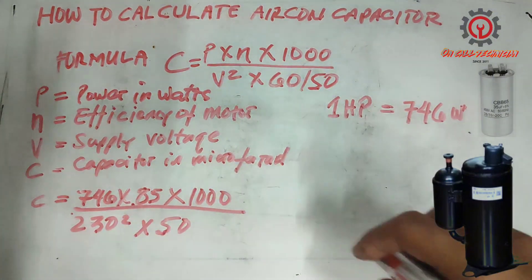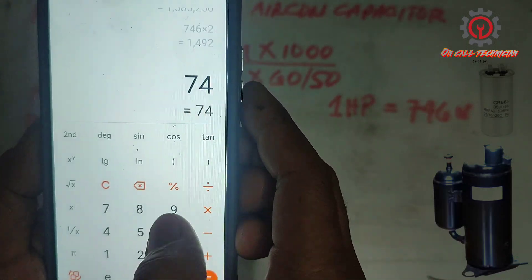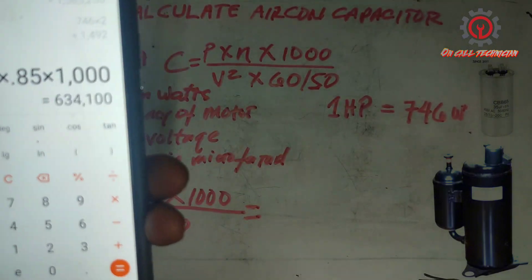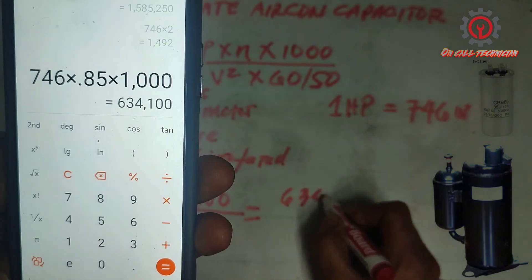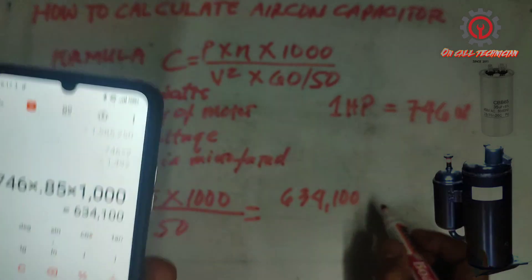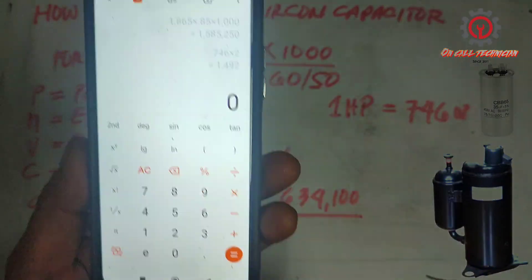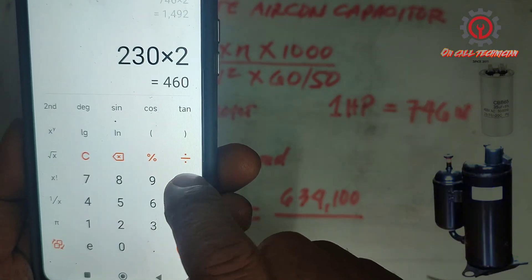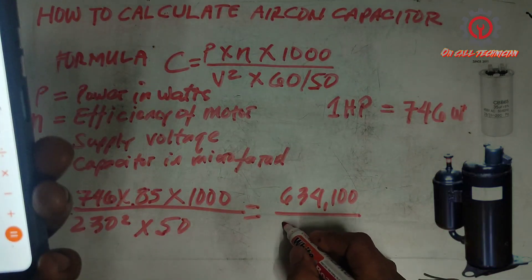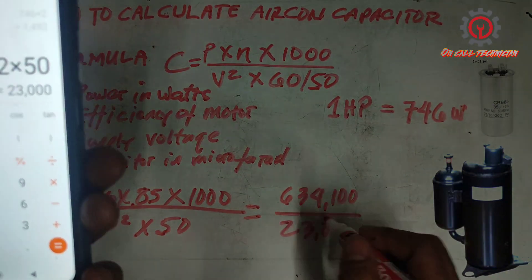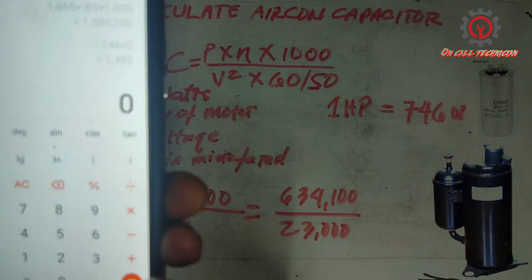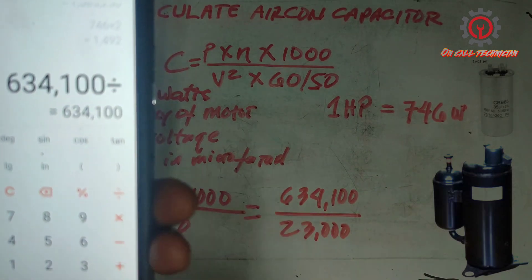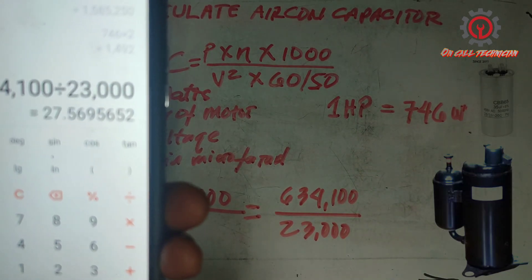746 times 0.85 times 1000 equals 634,100 divided by 23,000 equals 27.56.